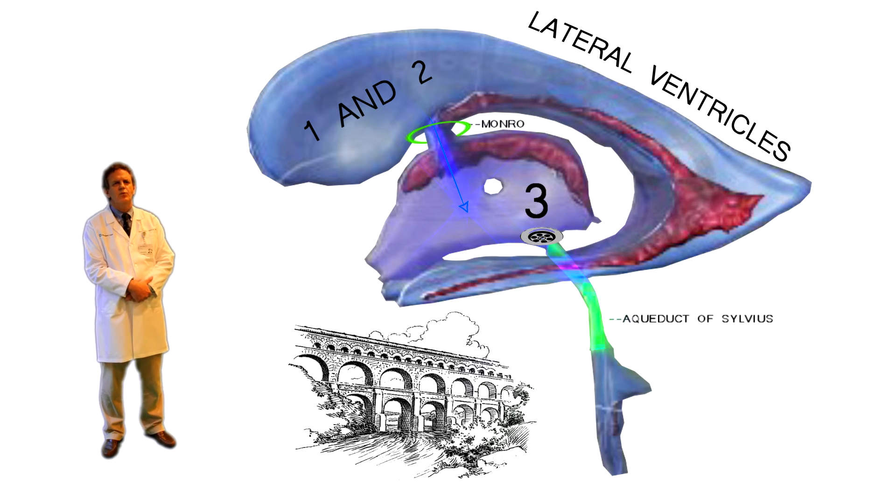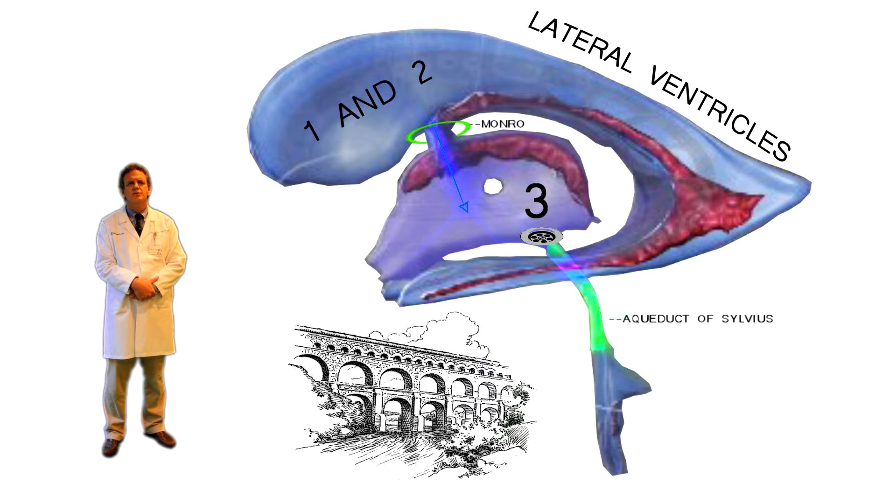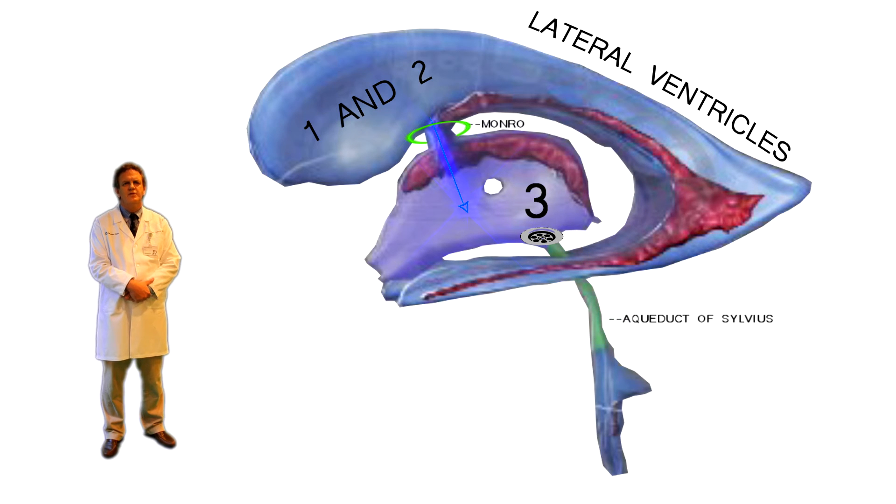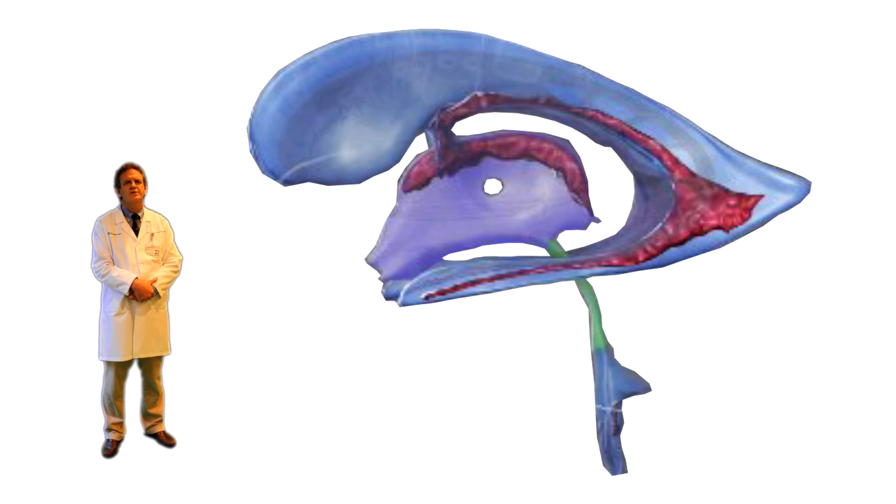An aqueduct is a system of water transportation that is associated with ancient Roman architecture, and looking at this picture, you can easily see how doctors arrive at this name for the specific structure in the brain. Thus, the pipe connecting the third ventricle to the fourth ventricle is called the aqueduct of Sylvius.